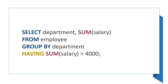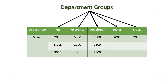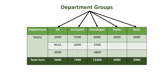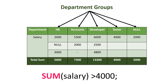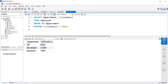Now look at this query. This query will fetch department and the sum of salary of each department from the employee table, and here we have a having clause with the condition that the sum of salary should be more than 4000. From the employee table it will first group the salary according to departments, and the sum aggregate function will add the salary of each department. Finally it will return only those rows which meet the condition that the sum of salary should be more than 4000, giving us this output.